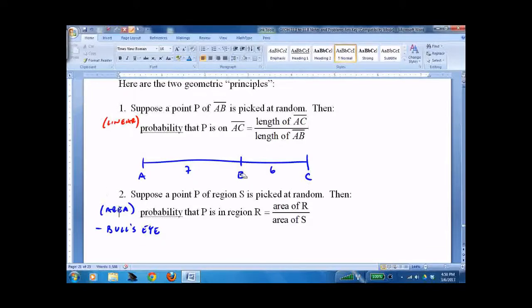What's the probability I hit segment AC? It has length 7 and the total is 13, so the probability is 7 out of 13. Not too complicated - just practice on probability and practice on the geometry.